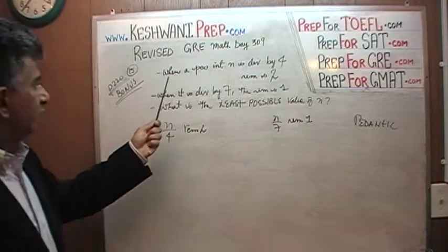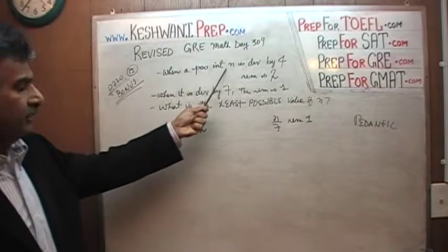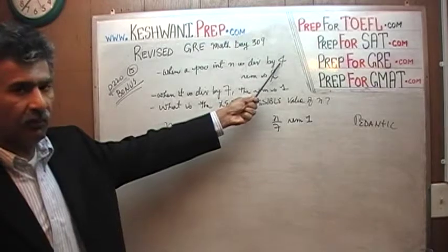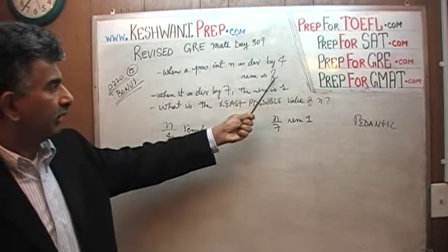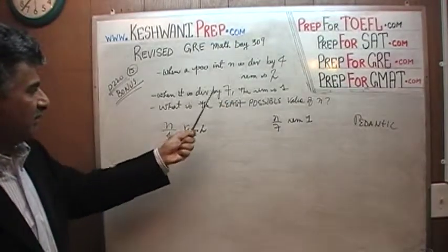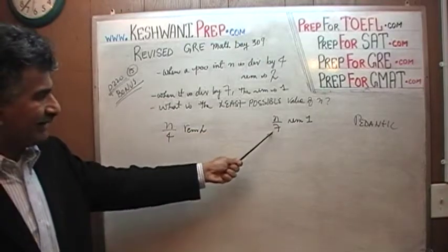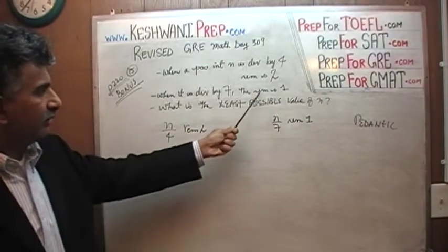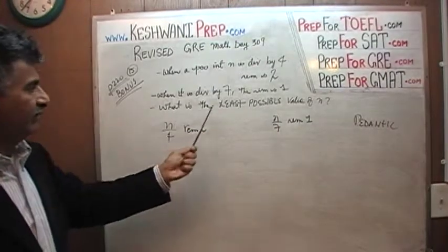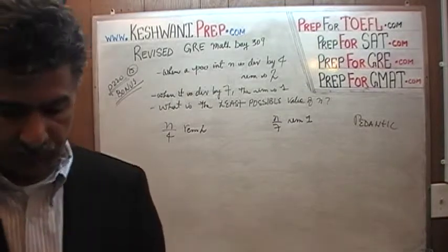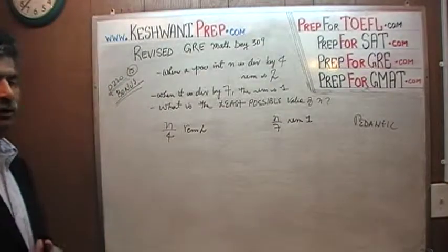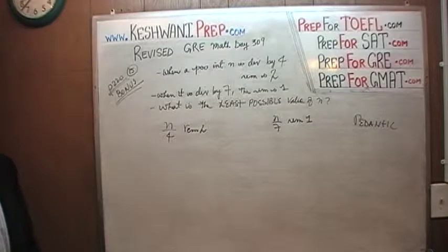Here is what it says: when a positive integer N is divided by 4, we get a remainder of 2. But when it is divided by 7, it gives you a remainder of 1. The question simply is: what is the least possible value of N that will do the job? Pause the video at this point, do it yourself, and then continue watching the video.